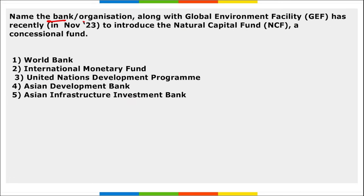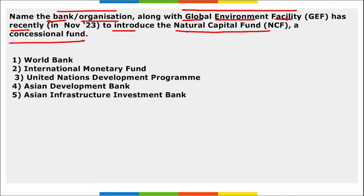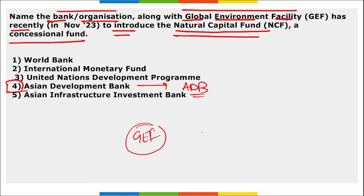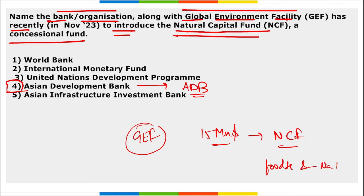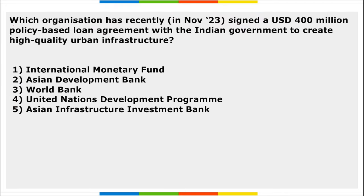Next: name the bank or organization, along with the Global Environment Facility, that recently launched the Natural Capital Fund (NCF) — a concessional fund. It is the Asian Development Bank. GEF (Global Environment Facility) committed 15 million dollars to support the NCF initiative focused on improving food security and safeguarding natural capital.